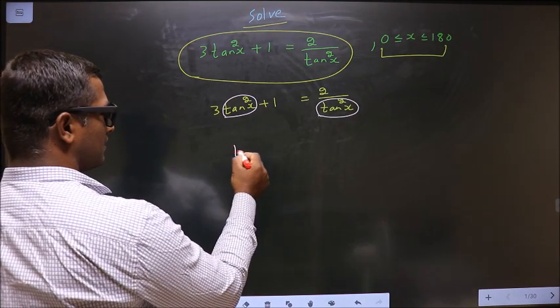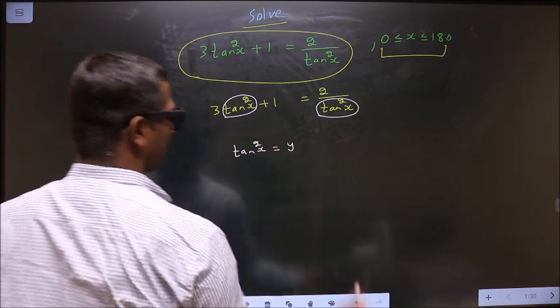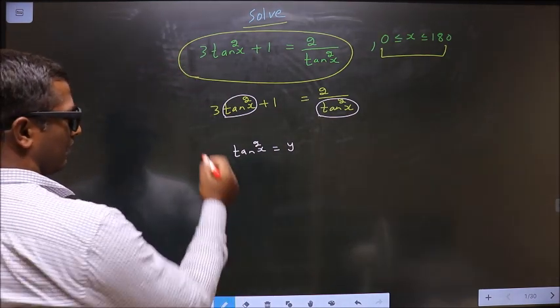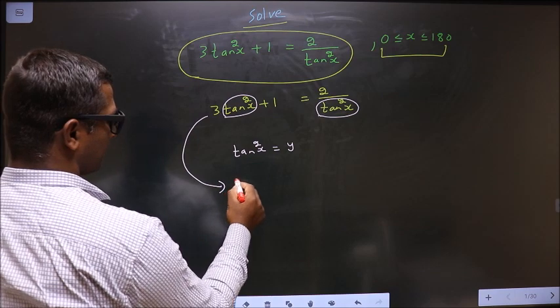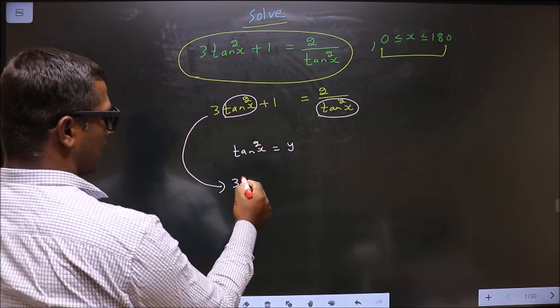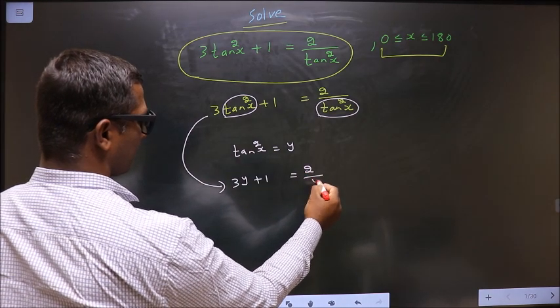So what I do is I take tan square x to be some other letter, let us say y. Now this equation will become 3 in place of tan square x, y plus 1 equal to 2 by y.